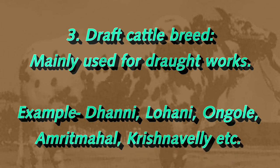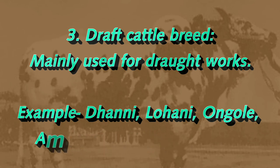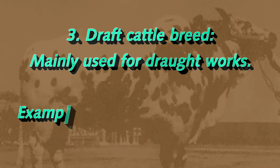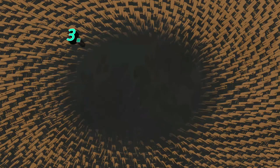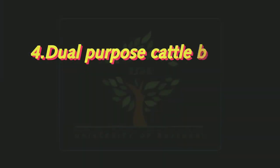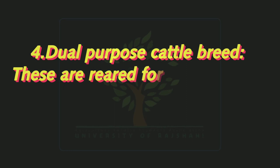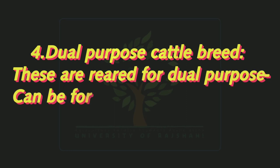Number three: draft cattle breed, mainly used for draft work. Dhani, Lohani, Angul, Amrit Mahal, Krishna Valley, etc. are examples of draft cattle breed.